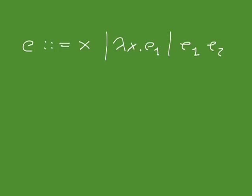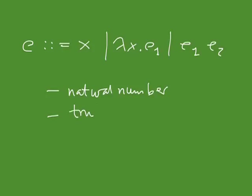One can show that you can code up the natural numbers, even in this simple setting. You can code up truth values, and you can express recursion. But then the question arises: why do you have to code these up? Why can't you just add them as primitives? And that's what you do in the applied lambda calculus.